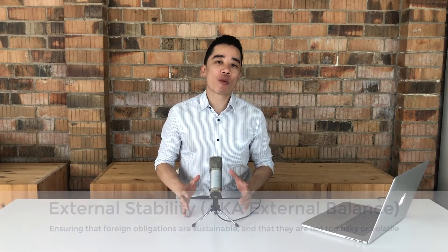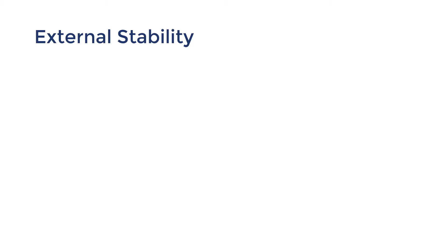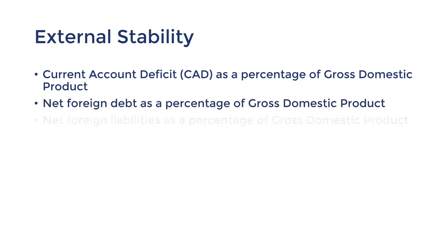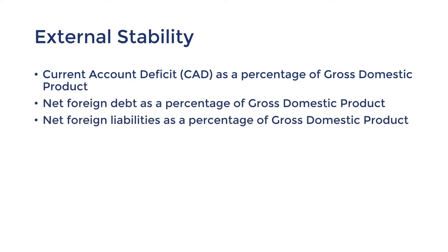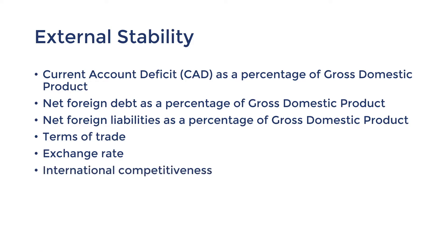We can find out more about what we need to learn by looking at the syllabus. The topic of external stability comes in topic three. The indicators of external stability include the current account deficit as a percentage of GDP, net foreign debt, net foreign liabilities, terms of trade, exchange rate, and international competitiveness. For each of these topics, we'll need to know the trends as well as their causes and effects.